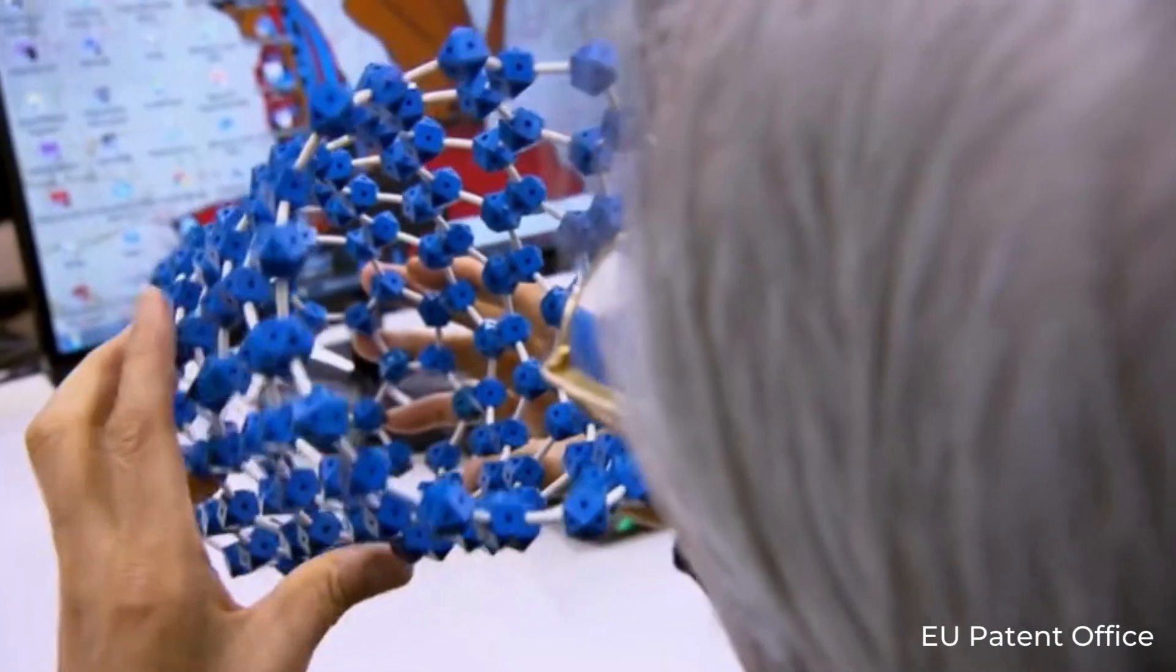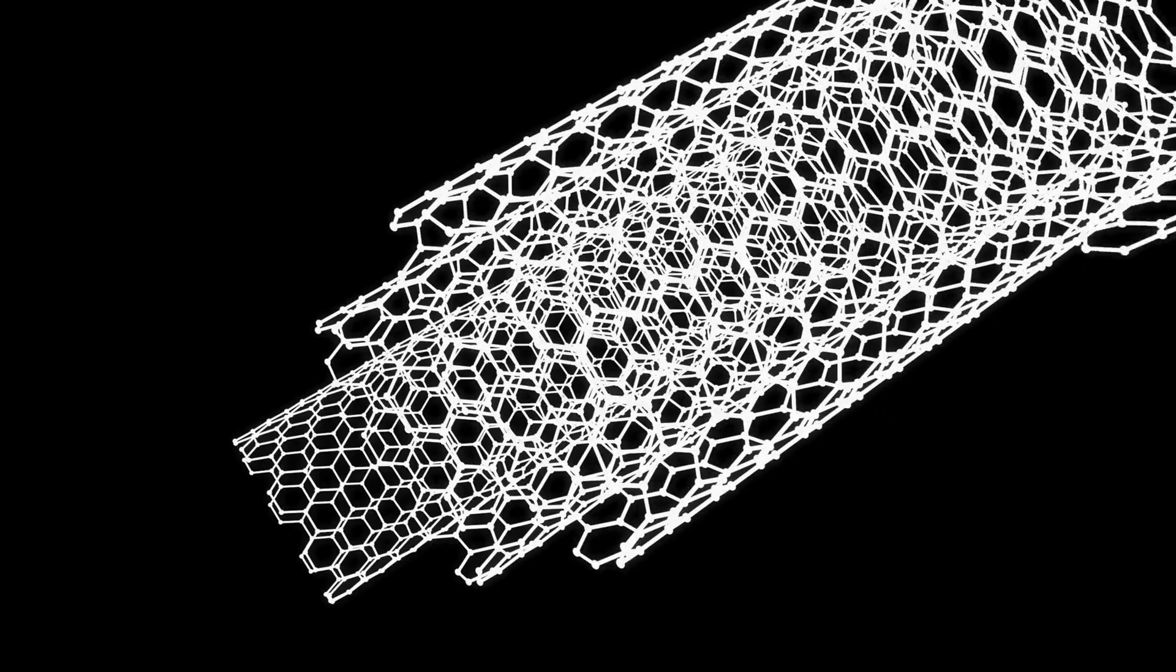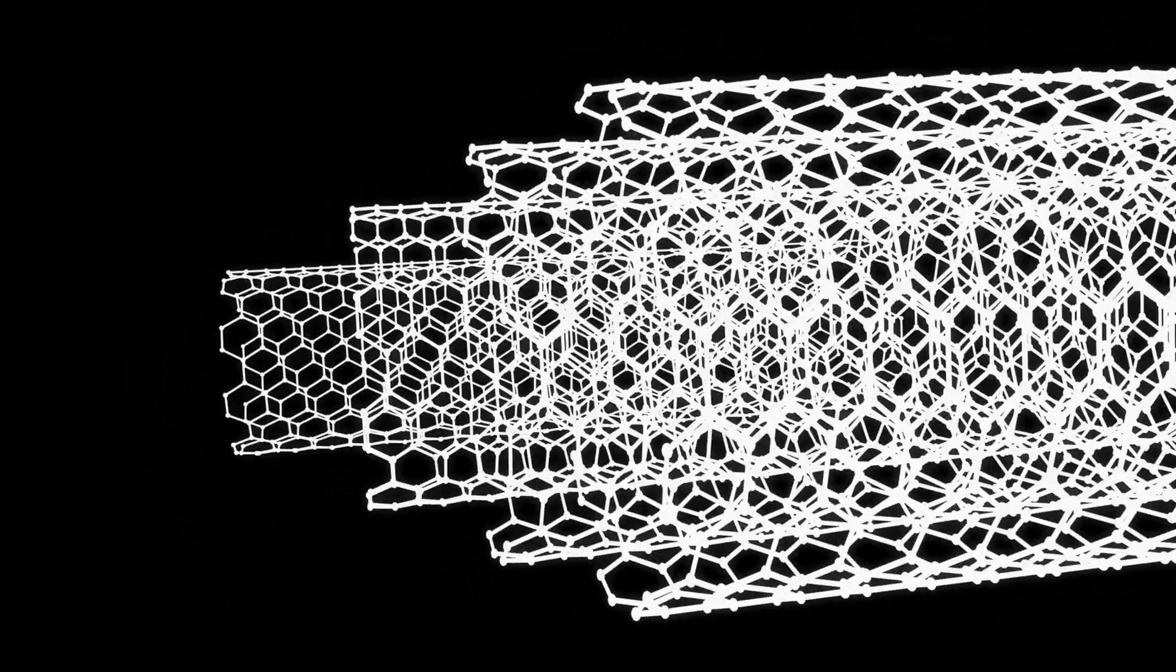When Japanese physicist and inventor Dr. Sumio Iijima discovered carbon nanotubes in 1991, it provided a theoretically viable material for construction.